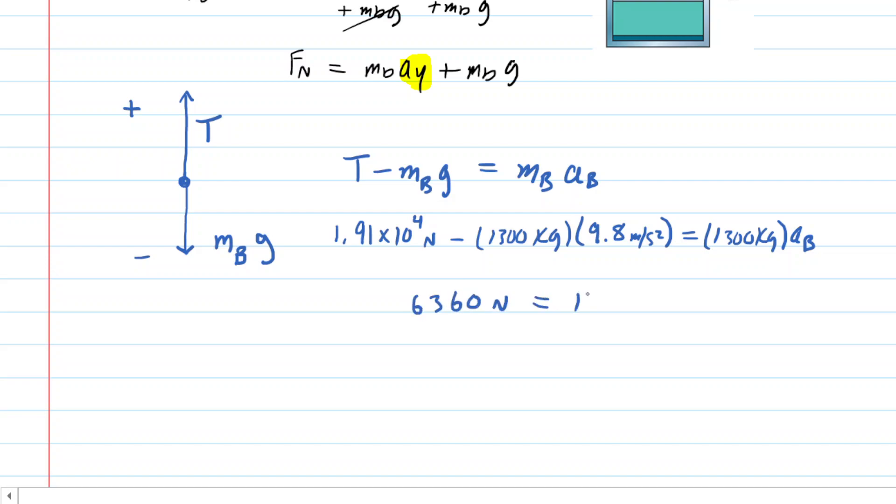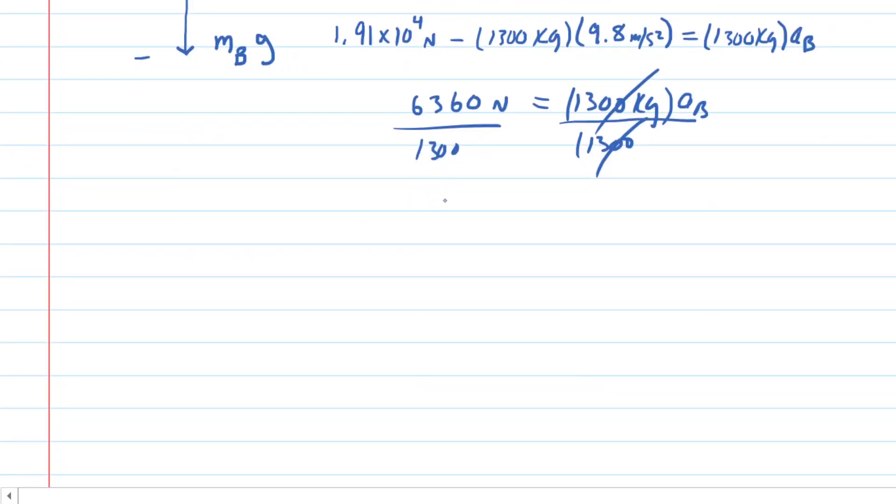And then we want to solve for the acceleration on cab B so we would just divide both sides of this equation by the 1300 kilograms, canceling it out on the right hand side.